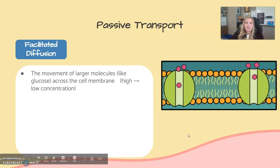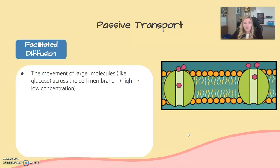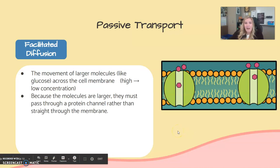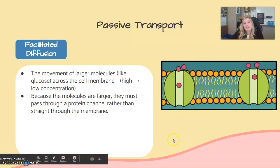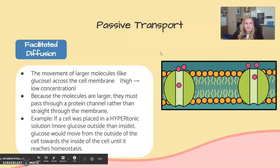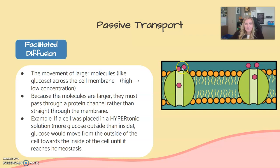Next, we have facilitated diffusion — the movement of larger molecules like glucose across the cell membrane, still from high concentration to low concentration. Since these molecules are larger, they can't pass directly through the membrane; they have to pass through a protein channel, like a tunnel. For example, if a cell is placed in a hypertonic solution with more glucose outside than inside, the glucose will move through protein channels into the cell to maintain homeostasis.